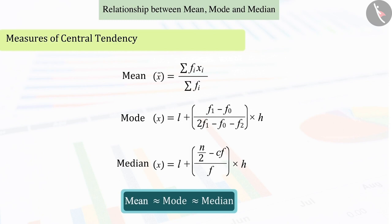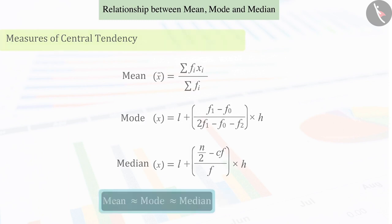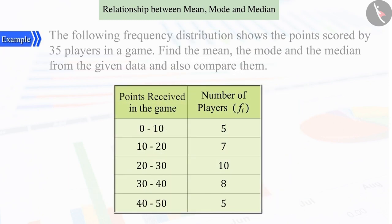Let's understand this by an example. The following frequency distribution represents the points scored by 35 players in a game.